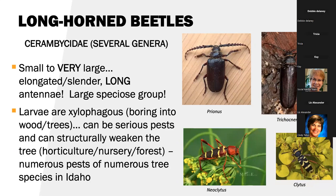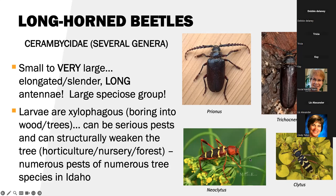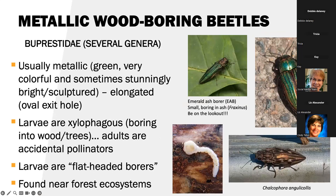The next group: longhorn beetles, Cerambycidae. These can be small to very large — elongated, slender, with long antennae. That's where they get their common name. It is a large specious group. The two largest beetles in Idaho are Prionus californicus and Trichonemis right here. As larvae they are pests — xylophagous, boring into woody trees, seriously weakening them. They can pop up in homes and are bad for the horticulture, nursery, and forest industries. But as adults, a lot of these actually feed on nectar as a supplement. You can also see the red-banded ash borer and Clytus, which is a wasp-mimic beetle feeding on nectar.